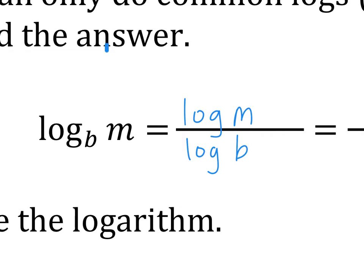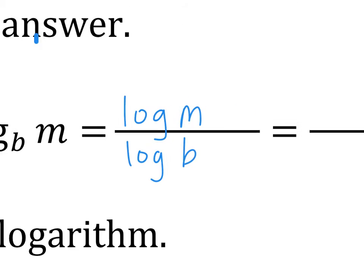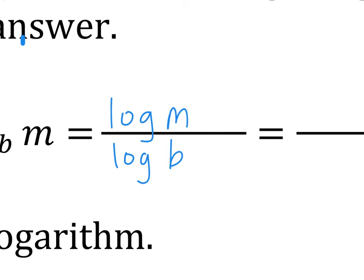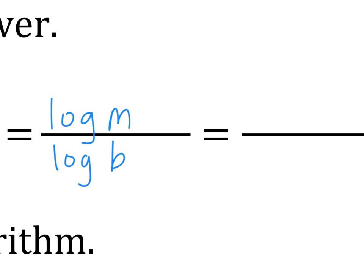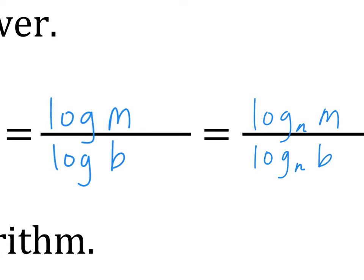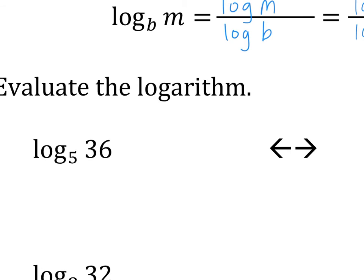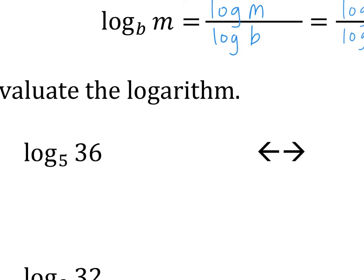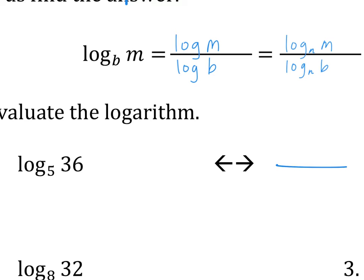So to change base: take the log of any base you want of the number that's inside, divided by the log of the base. In this case I use log base 10 — no number written means base 10. I can use that for any base I want, as long as I keep the same base top and bottom, I get the same exact number. For example, log base 5 of 36: there is no base 5 on the calculator, so we need to change base. Let's use common log — log base 10.